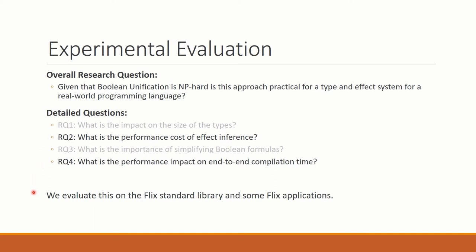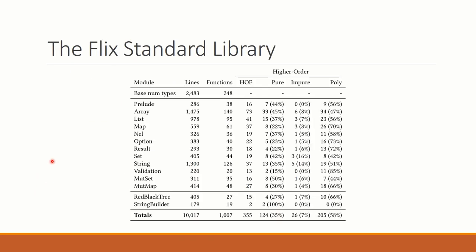To evaluate this, we consider the Flix standard library, which has approximately a thousand functions, and we consider some Flix applications. In total, we look at about 30,000 lines of Flix code. Looking at the Flix standard library, it is divided into a collection of modules shown here. And if we just consider, for example, the list module, we can see that there is more than 900 lines of code. There are 95 functions. Of those, 41 are higher order, so they take function arguments. And we have designated 15 of them as requiring pure function arguments. We have designated three as requiring impure function arguments, and 23 as effect polymorphic. So they work both with pure and impure function arguments.